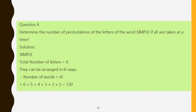Question number 4: Determine the number of permutations of the letters of the word SIMPLE, if all are taken at a time. There are 6 letters and all are different. So the answer is 6 factorial. Another way: select and arrange 6 letters from 6, which is 6P6, also equal to 6 factorial. Writing 6 × 5 × 4 × 3 × 2 × 1 gives 720.